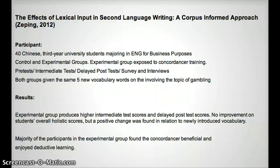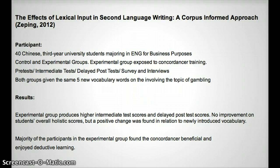Each group consisted of 20 students. A writing pre-test showed no statistically significant difference in writing competency between the two groups. Both groups were exposed to new vocabulary surrounding the topic of gambling. The experimental group received training in the use of concordancers and learned vocabulary through that method, while the control group was only allowed to use dictionaries.